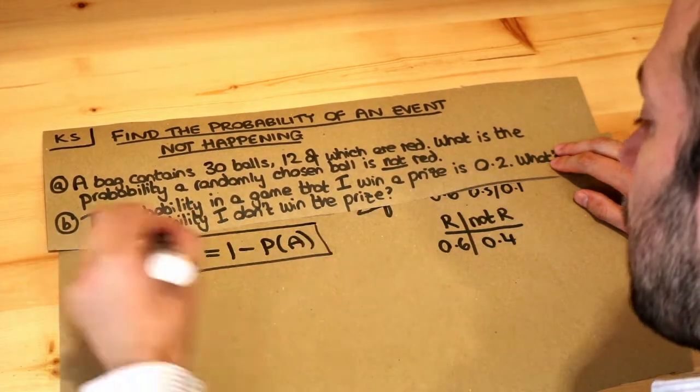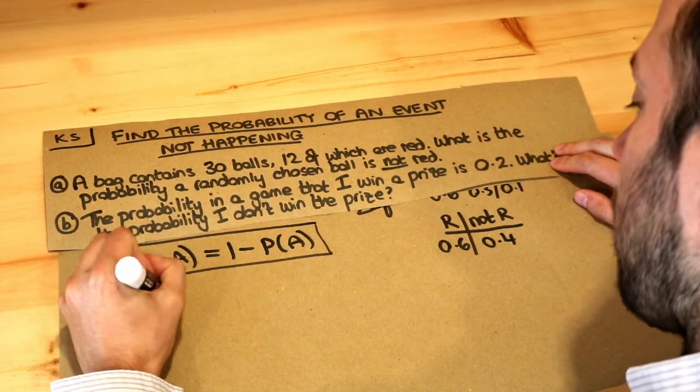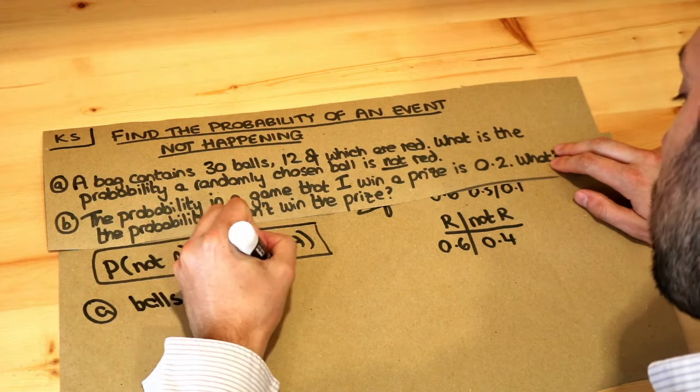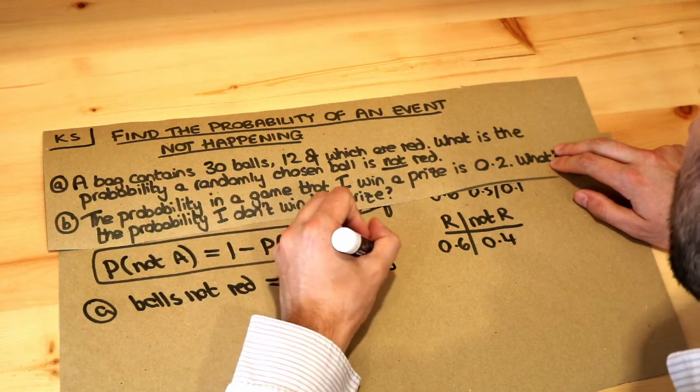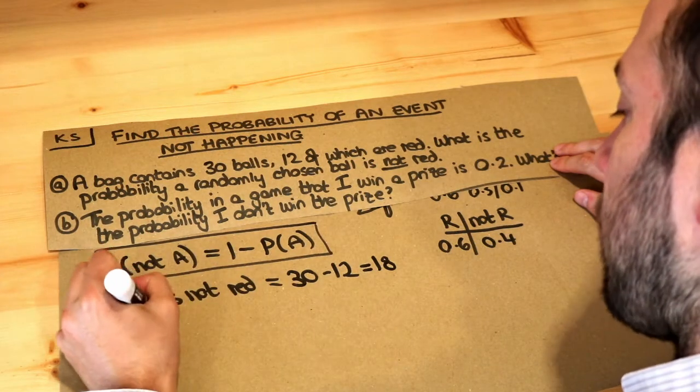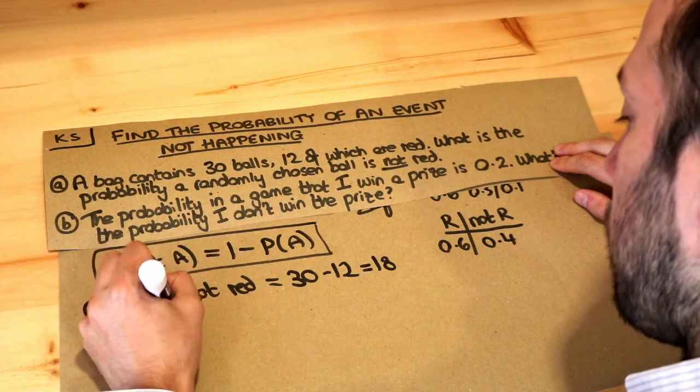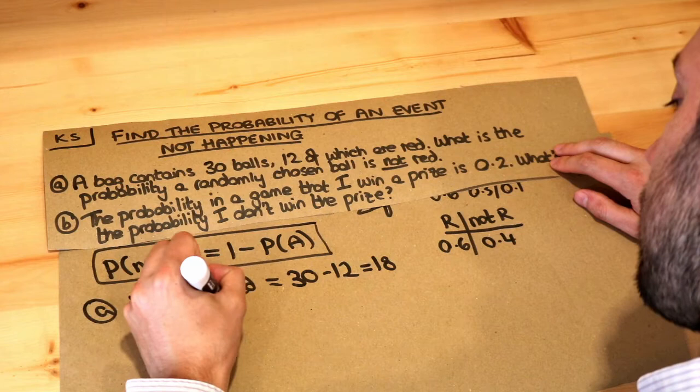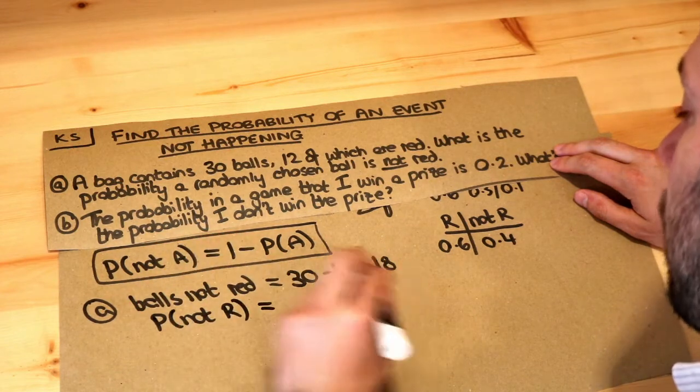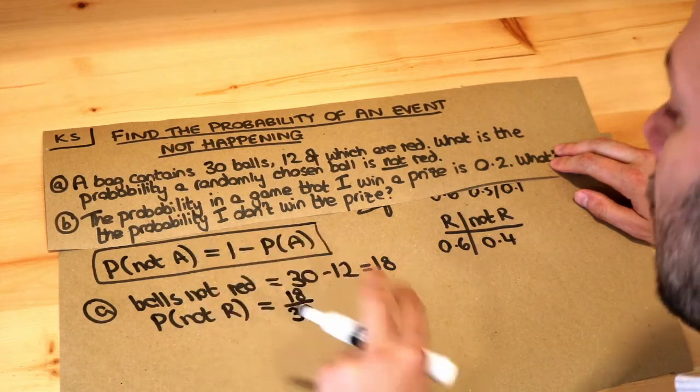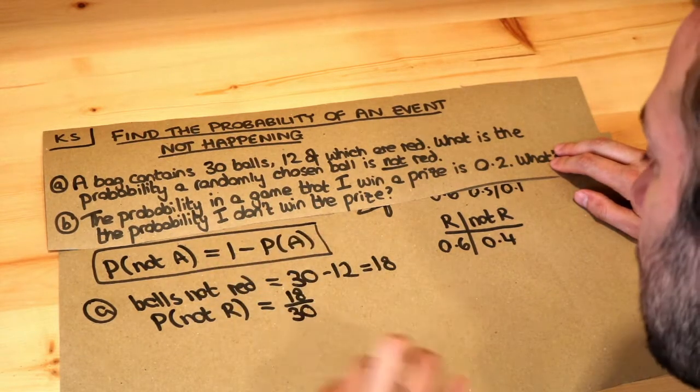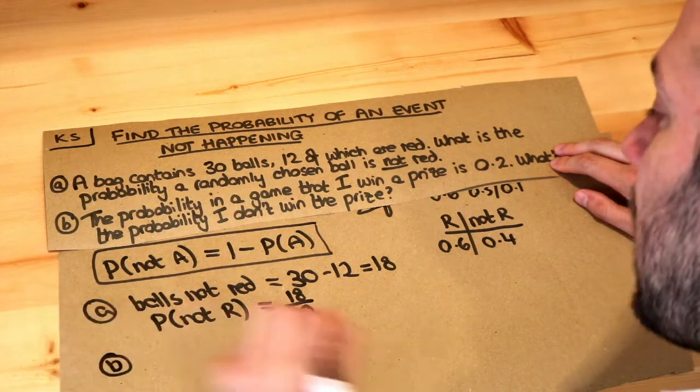Well, 12 of the balls are red, so the balls which are not red—the frequency, not a probability—we just do 30 minus 12. There's 18 balls which are not red. So therefore, the probability of the ball being not red would just be those 18 balls which are not red out of the total number of balls, which is 30. So I didn't have to explicitly use this formula here, but for question B we can.